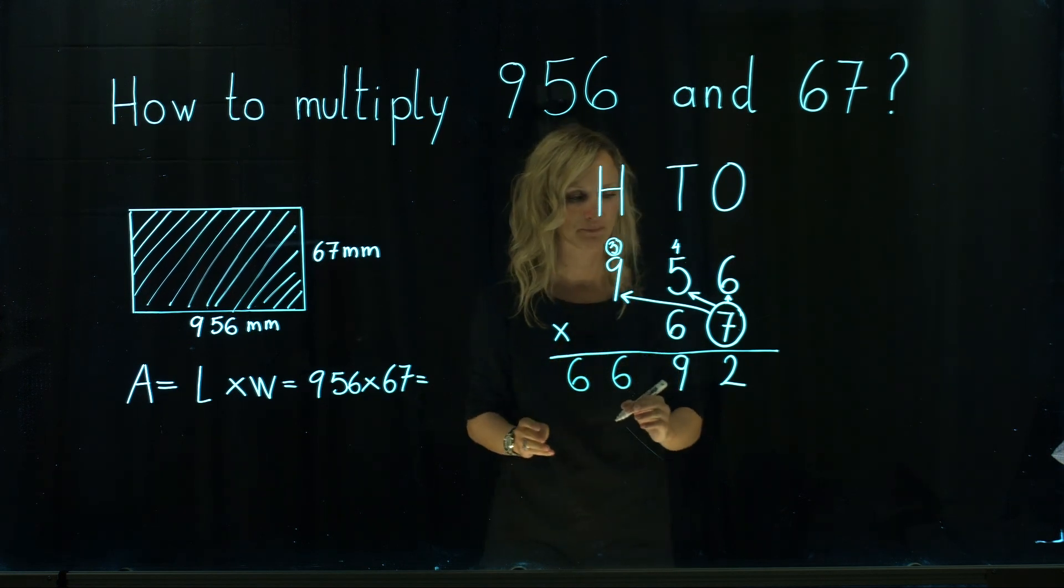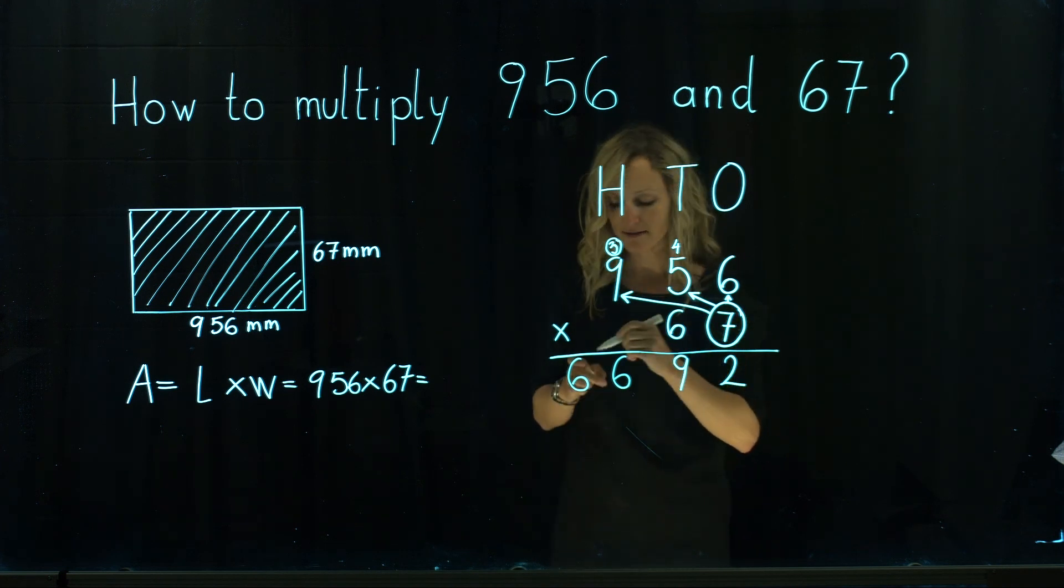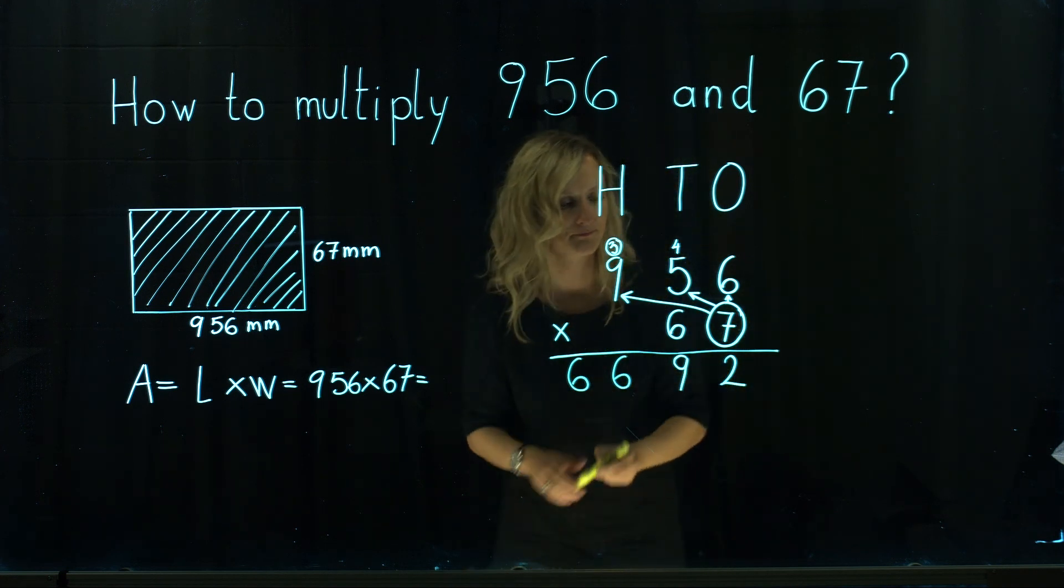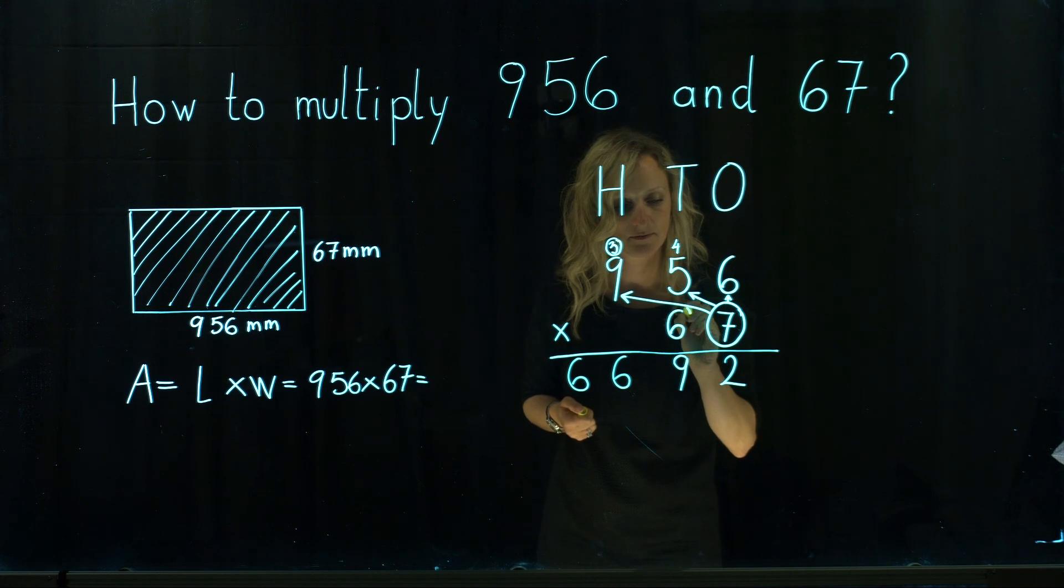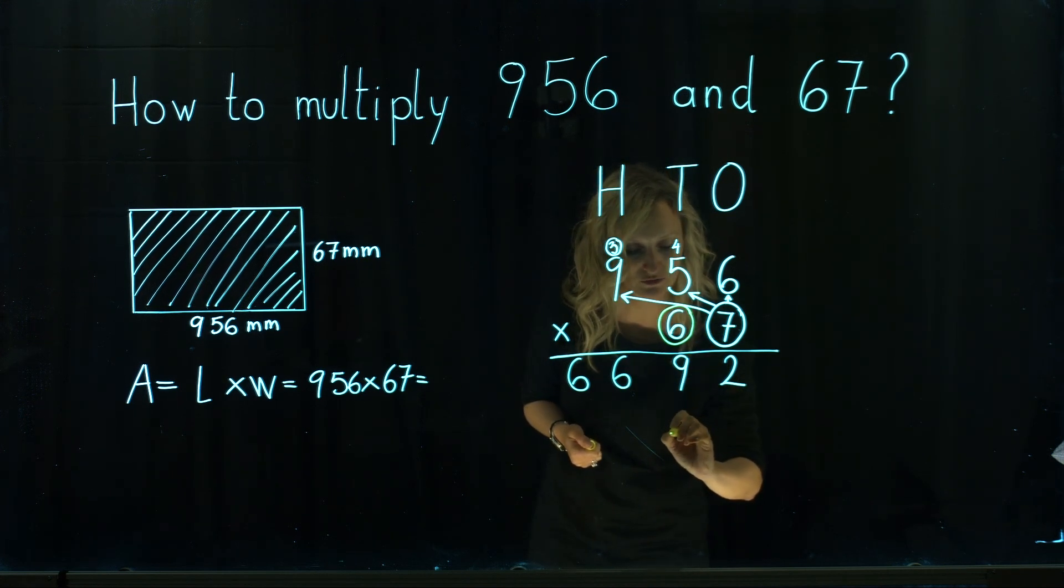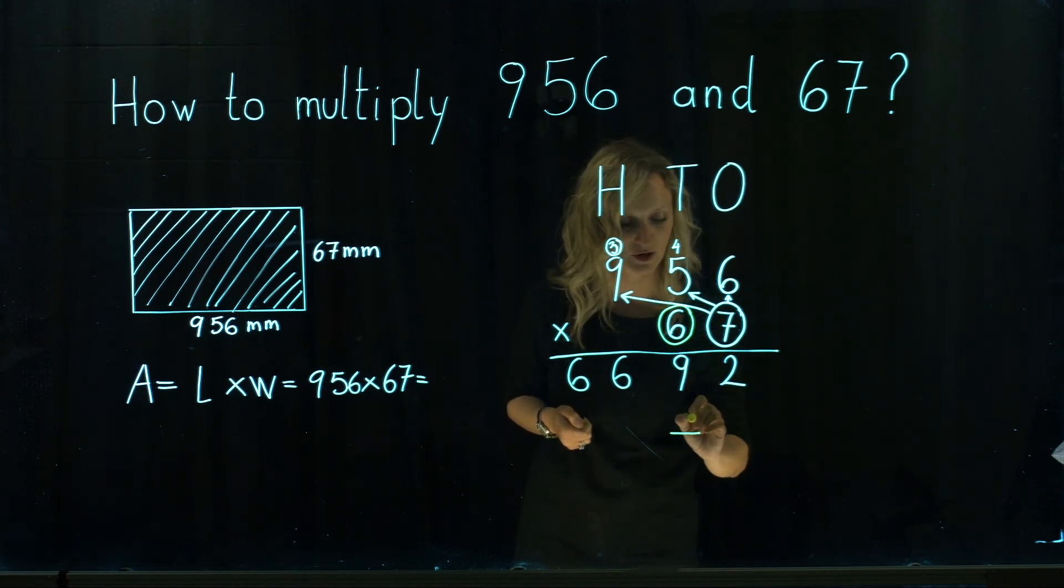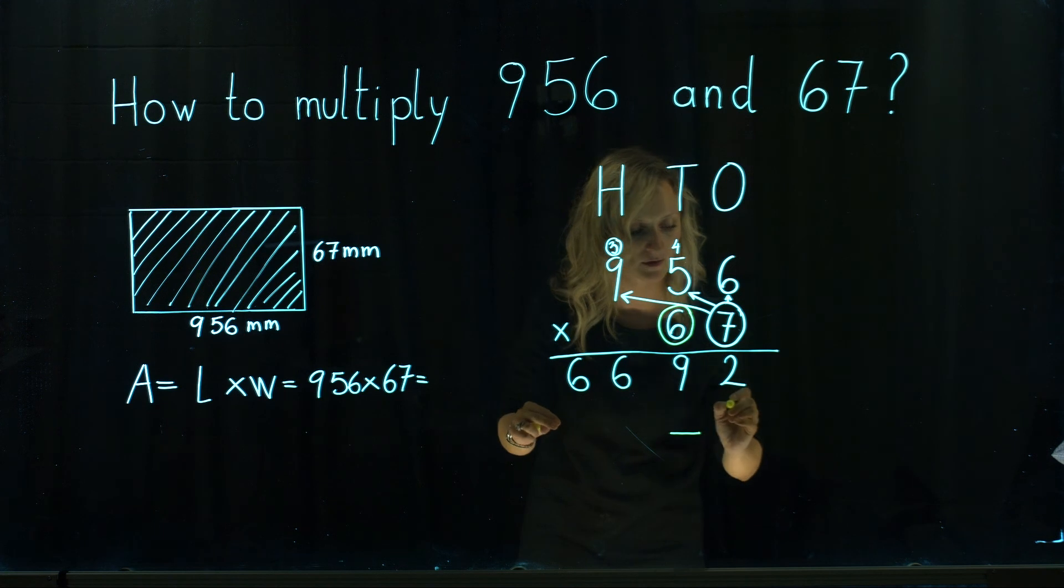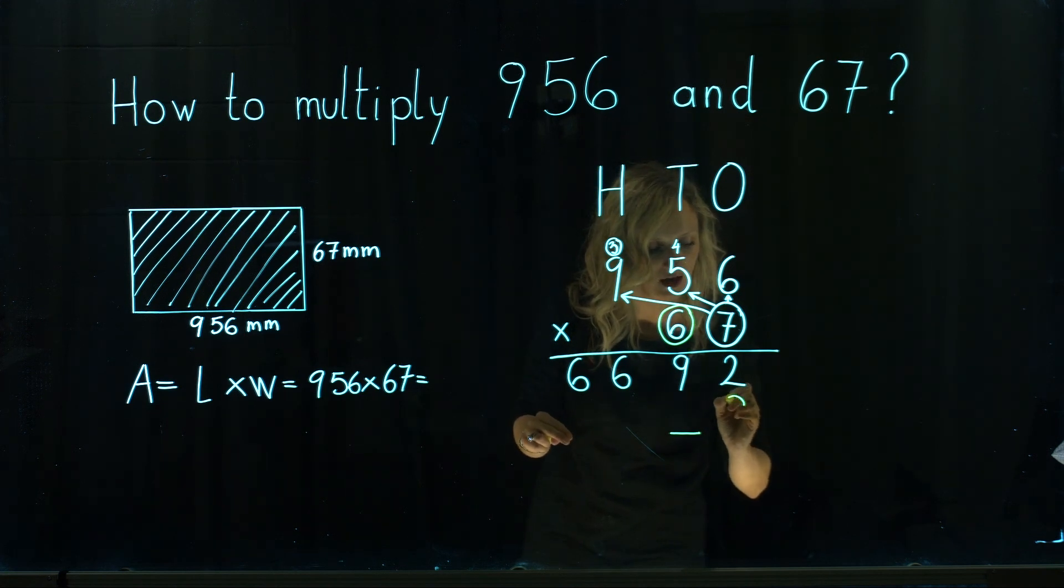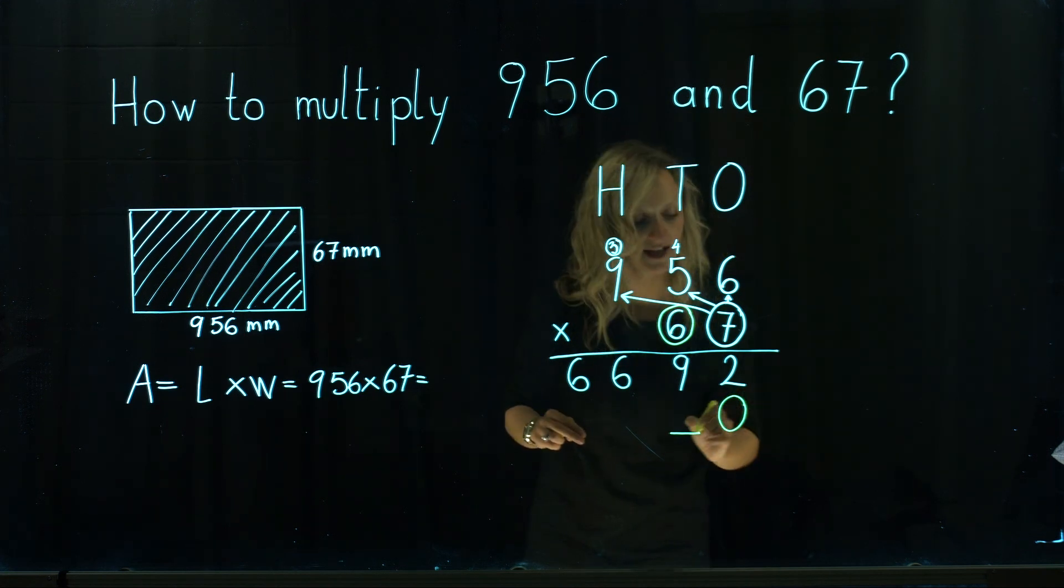And we write both numbers because we finished with the number on the top. Then we continue with the place value of tens. Because we are continuing with the place value of tens, we will continue writing our results at the place value of tens on the bottom as well. That's why we need on the place value of ones a zero.